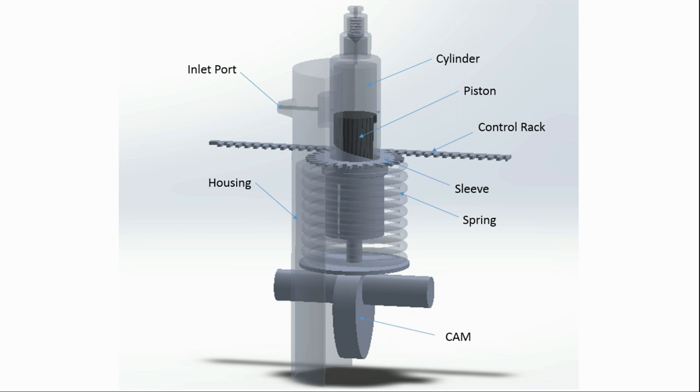The control rack meshes with the tooth portion of the sleeve. It controls the rotation of the sleeve and thus of the piston. This spring presses the cam follower onto the cam surface.